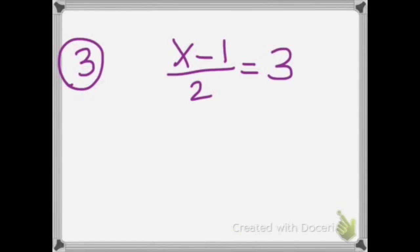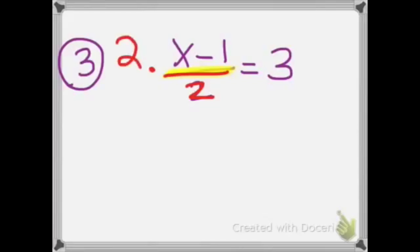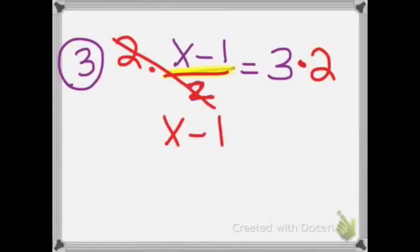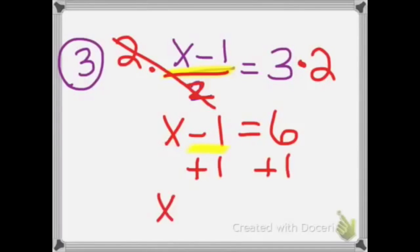The third problem corresponds to example 3. We look at step 2 — get rid of the large fraction. We get rid of it by multiplication. Since it said divide by 2, we multiply both sides of the equation by 2, because 2 divided by 2 is 1. 3 times 2 is 6. Now step 3 says add or subtract the term without the variable — that's the negative 1. So we add 1 to both sides. x plus 0 equals 7. So the answer is x equals 7.